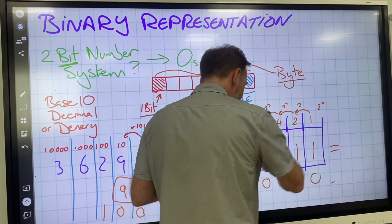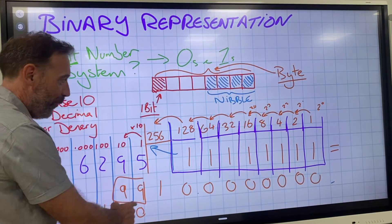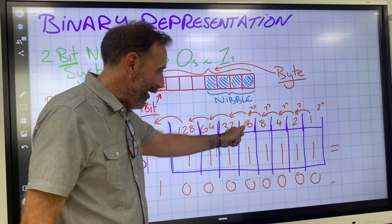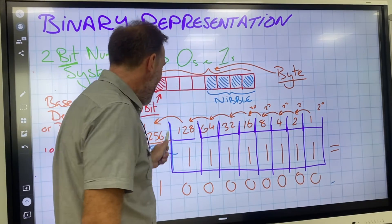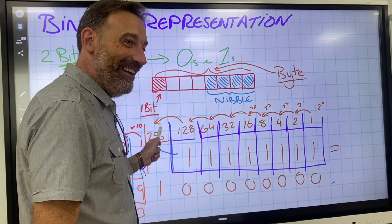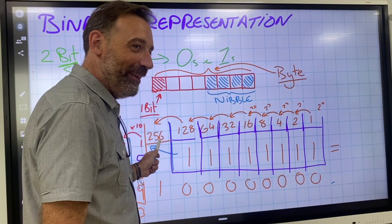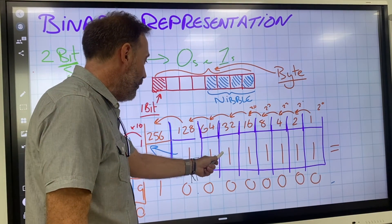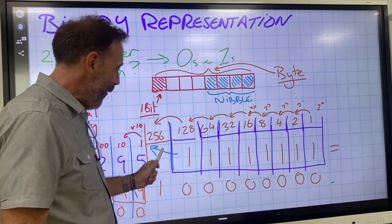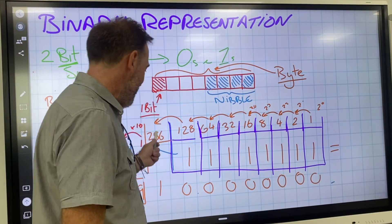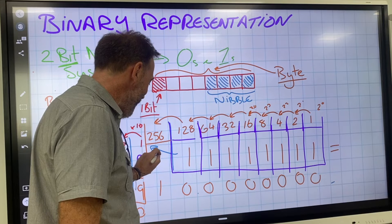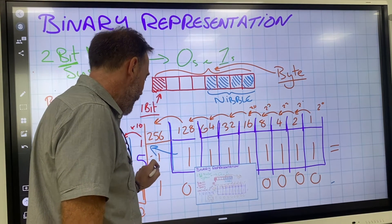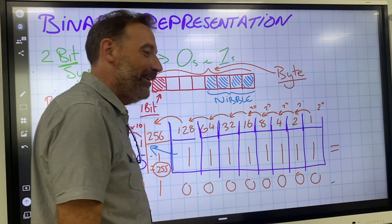Based on what we've seen, if every bit in the 8-bit register is 1, that must be 1 less than 256 — just like 99 is 1 less than 100. So 256 take away 1 equals 255. That's the maximum value in an 8-bit register.